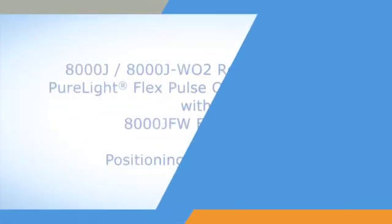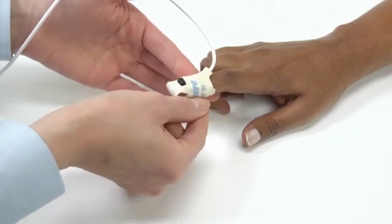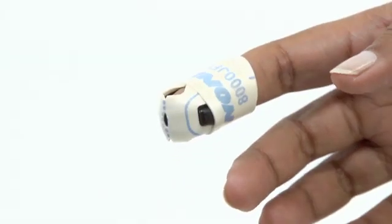This short video shows how to properly position and secure the Nonin 8000J or 8000JWO2 Pure Light Reusable Flex Sensor using disposable 8000JFW FlexiWraps.